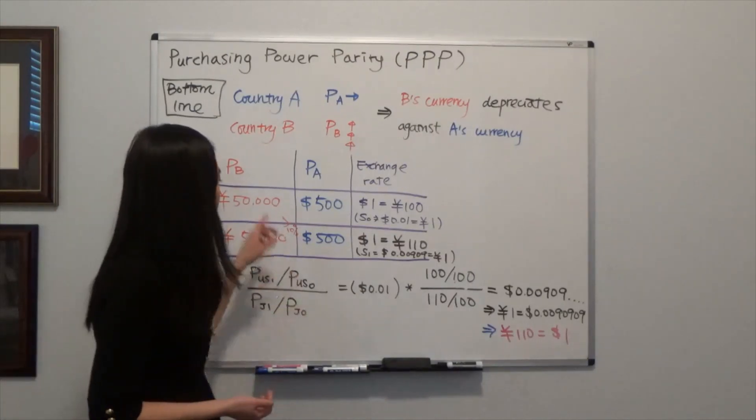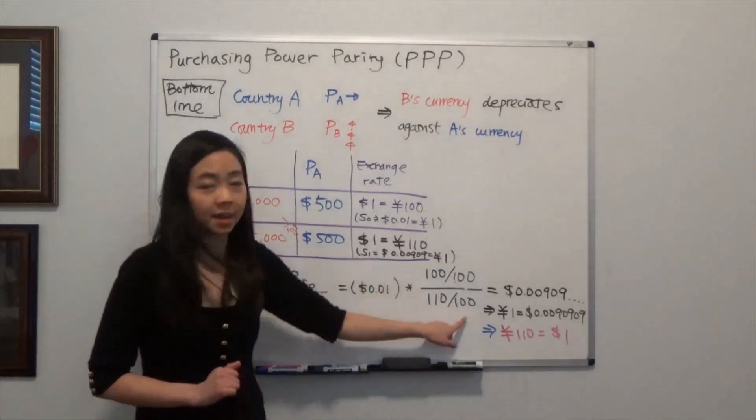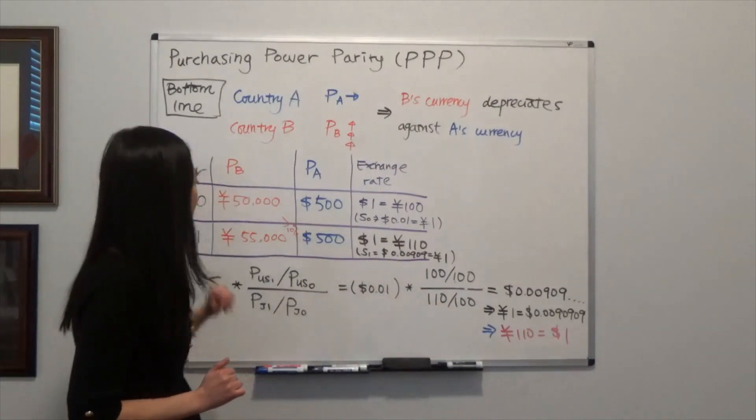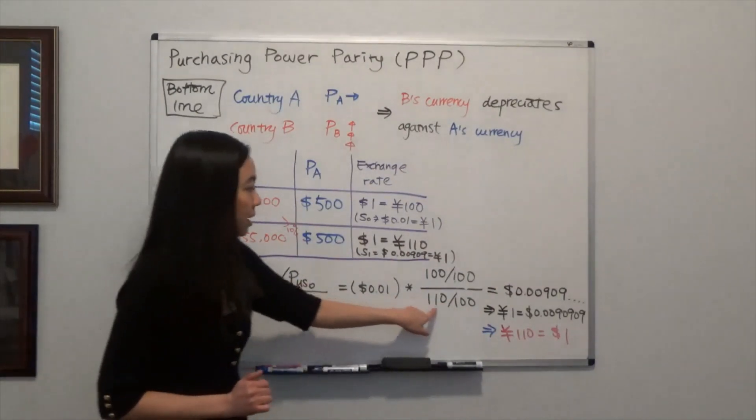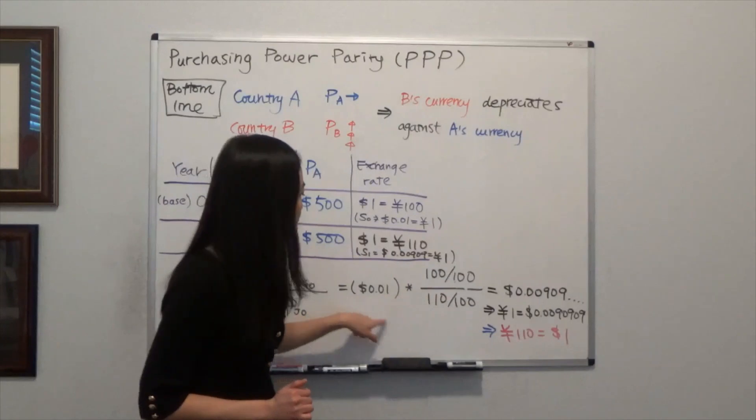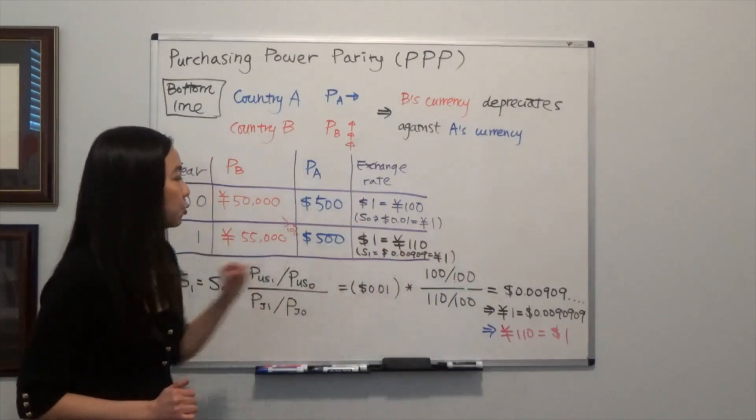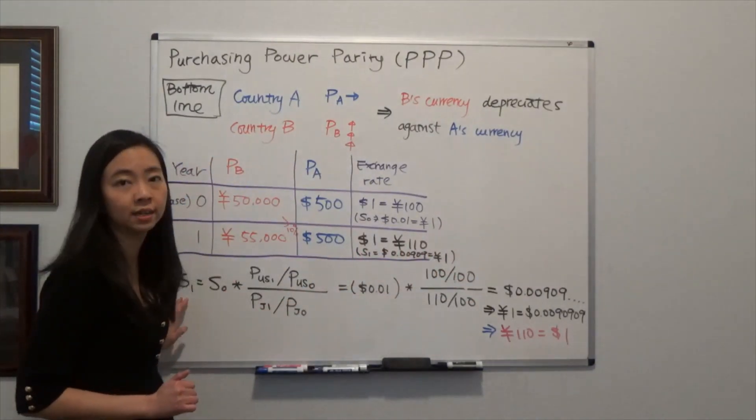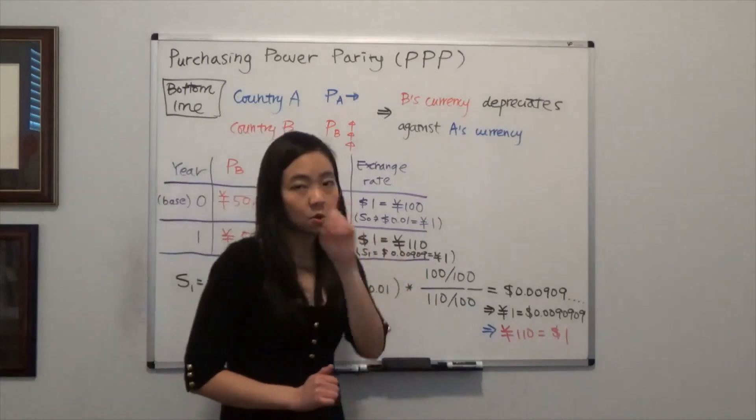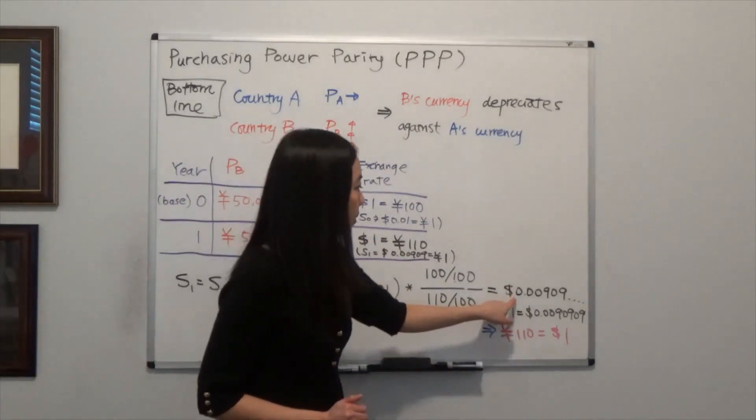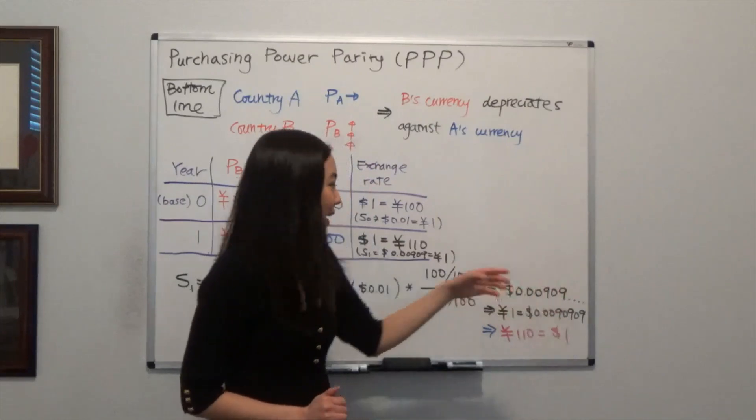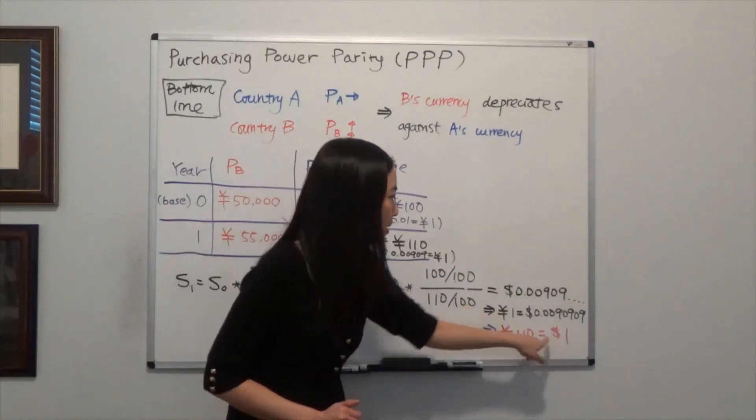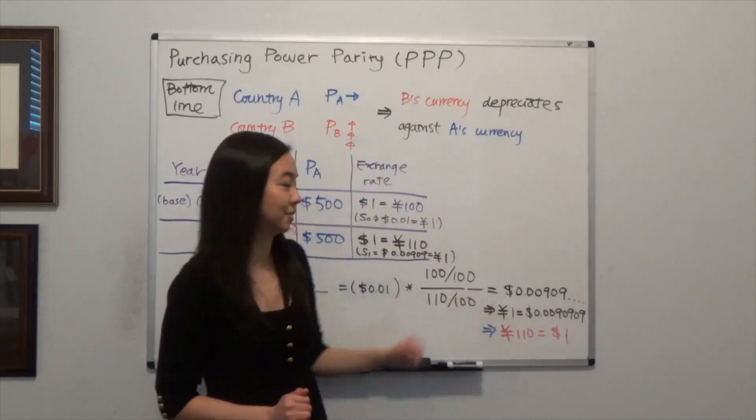And in Japan, we know that there is a 10% increase in the price level. And therefore, the price level in year 0 was 100. But the price level in year 1 was 110. And after you calculate that, you'll find that the target exchange rate in year 1 is equal to 1 yen is sold for 0.00909 dollars. And that's exactly the same as $1 for 110 Japanese Yens. And that's right here.